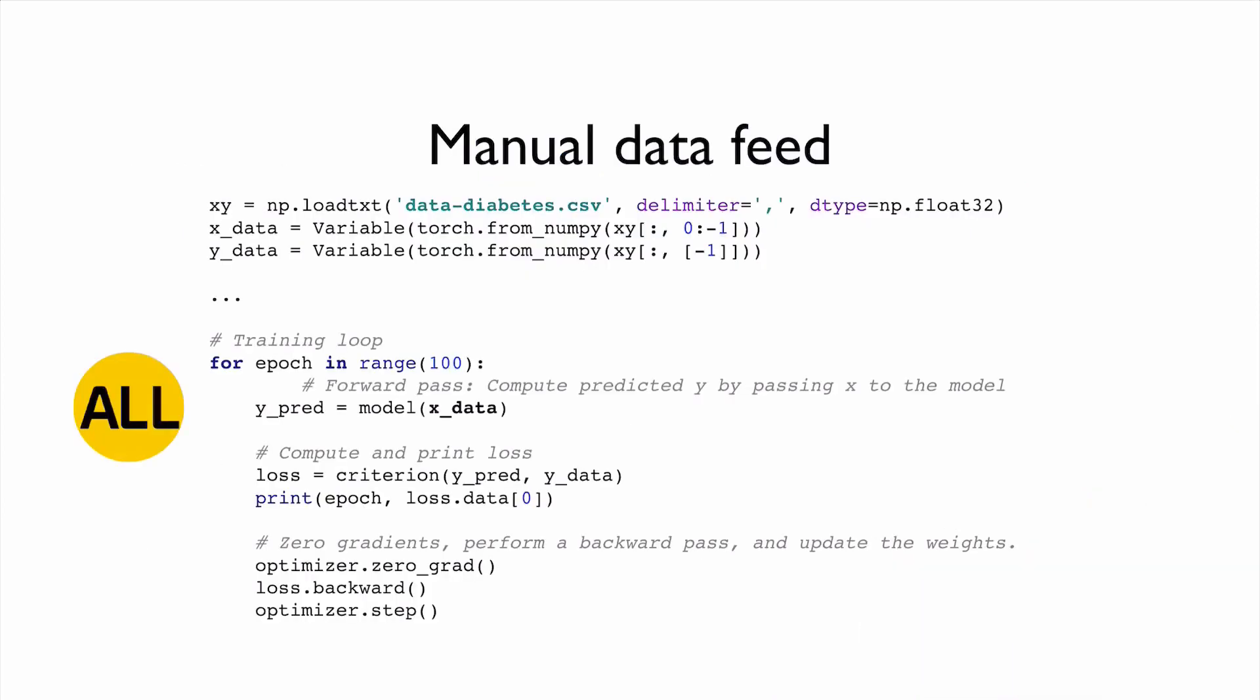In our previous lectures, we used this manual data feed. For example, we read all the data from a file, and then we divide them as X data and Y data. And in our training loop, we feed all data to the model, and then using this output, we compute the loss, and then we compute the gradients, and then we update our weight.